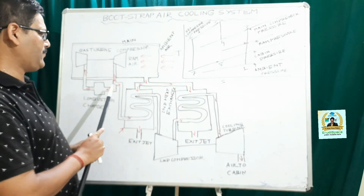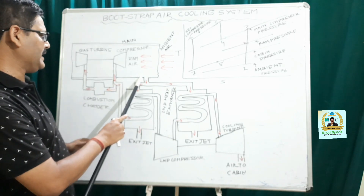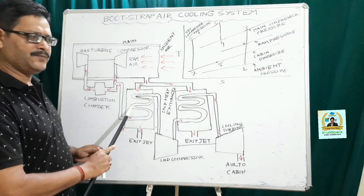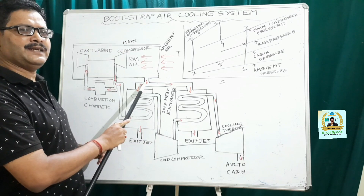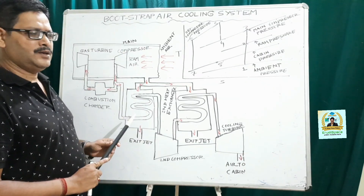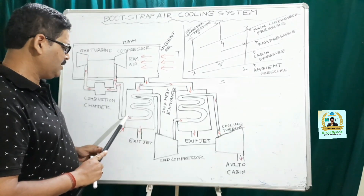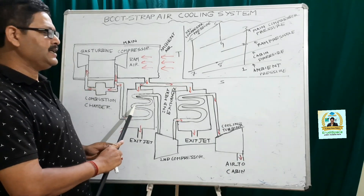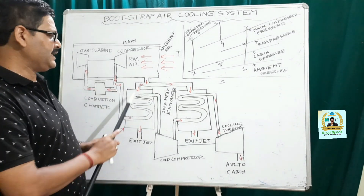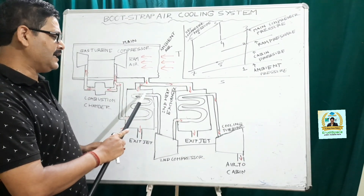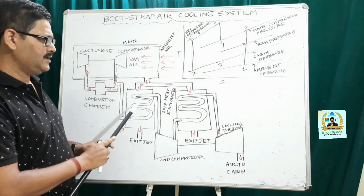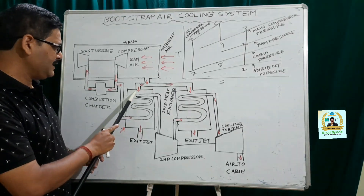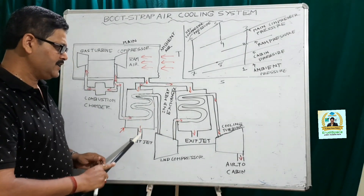The remaining part of the air actually passes through the first heat exchanger, and a fraction of the ram air is used to cool the compressed air. As the compressed air enters the heat exchanger it transfers heat to the ram air that is entering the heat exchanger. As a result, the temperature of the compressed air is actually reduced. Then this ram air lifts through the exit zone.